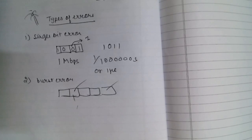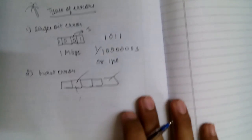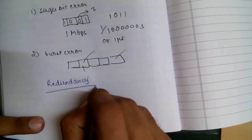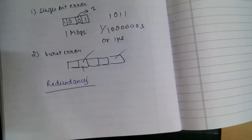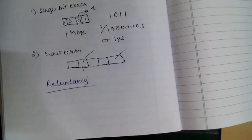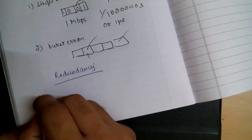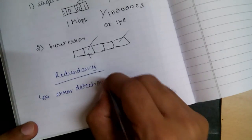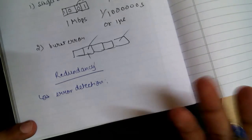The concept we use is redundancy. We add some extra bits to the data so that if they are changed, we can detect that interference occurred during transmission and the data is corrupted — allowing us to ask for retransmission or use other methods to correct it. The two things we want to do are: first, error detection, which is simply a yes or no — whether an error occurred or not.